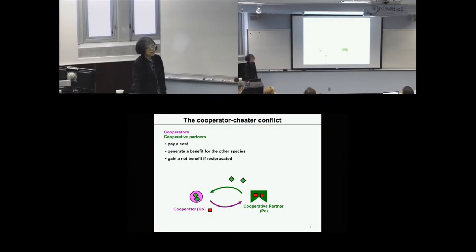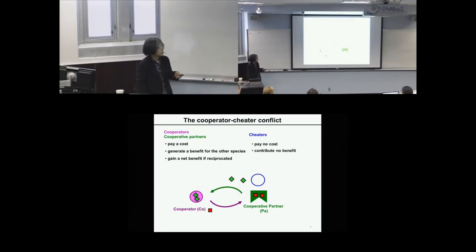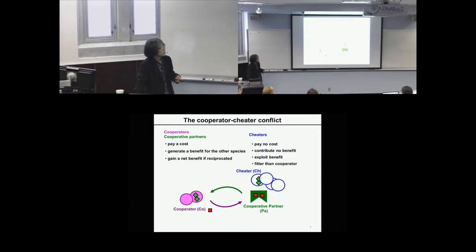However, cooperators can mutate to cheaters. Both populations can have cheater variants. Compared to cooperators, cheaters pay no cost and contribute no benefit — indicated by open symbols. Cheaters exploit the benefit, and thus cheaters are more fit than cognate cooperators in the sense that they divide more frequently.